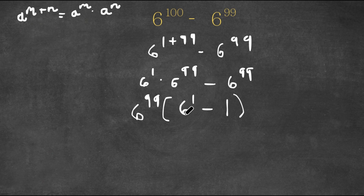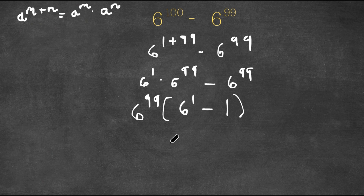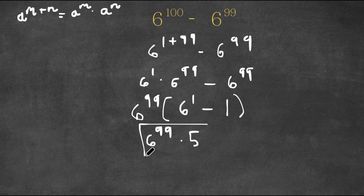So now we have 6 to the power of 1, which is simply 6, minus 1, times 6 to the power of 99. Let's solve what's in the parentheses: 6 minus 1 is simply 5. So we have 5 times 6 to the power of 99, and this is the most we can simplify this — so this is our answer.